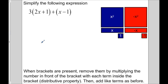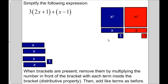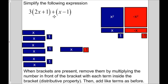Let's take a look at this expression: 3 times the quantity of 2x plus 1, and then plus x minus 1. This is basically saying we have 2x plus 1, but there are 3 of them. So let's represent that — here's 2x plus 1, and there are 3 of them, plus this set of x minus 1. That's what we have, but in tile form.